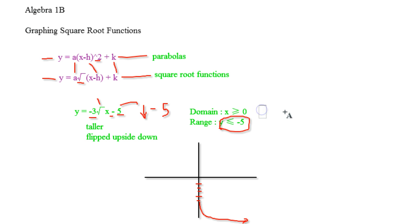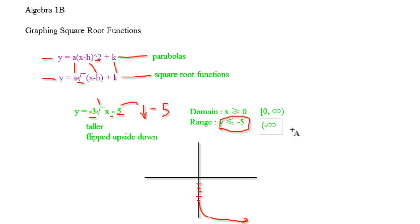If you want set notation for domain and range here: domain is bracket zero, comma, positive infinity, open parenthesis. Range — you have to start at the lowest — so negative infinity, open parenthesis, comma, negative 5, square bracket. And there you go — you have set notation for both domain and range.